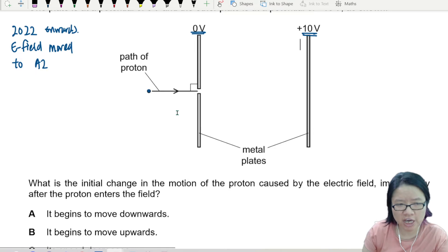What is the initial change in the motion of the proton caused by the electric field, immediately after the proton enters the field? So basically they're asking you what is going to happen to the proton.